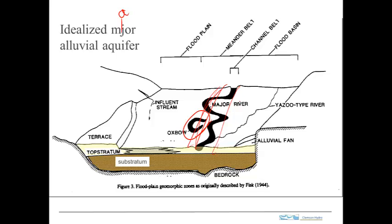Where the channel gets cut off, oxbow lakes can form. Away from the channel, the floodplain floods periodically. Far from the main channel the energy is fairly low, so fairly fine-grained materials are deposited — silts and quite fine-grained sediments out on the floodplain. All of this overlies a coarser-grained system called the substratum — the coarse alluvial aquifer resting on bedrock. This is the primary target for water supplies. The fine-grained floodplain deposits can create a confined aquifer, while areas with sands or relatively coarse material may behave more like an unconfined aquifer.